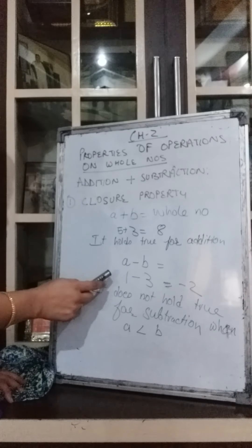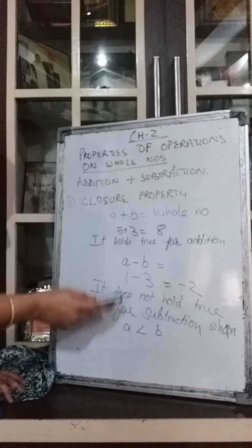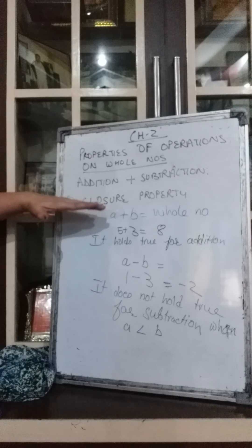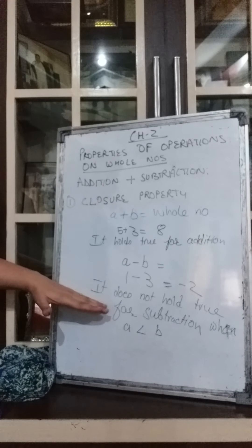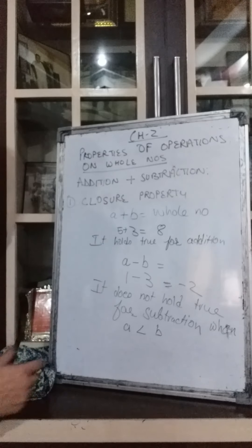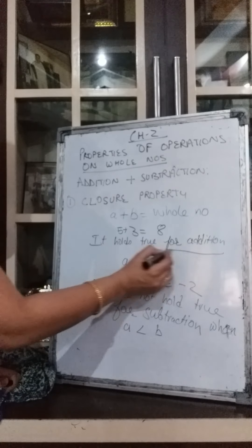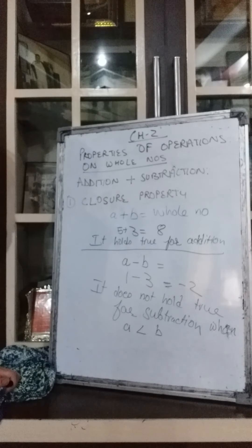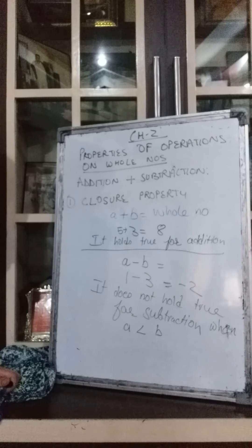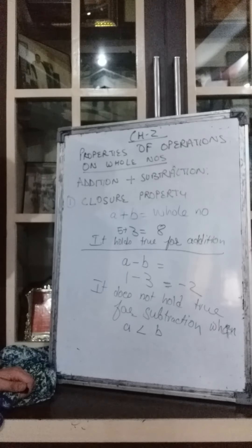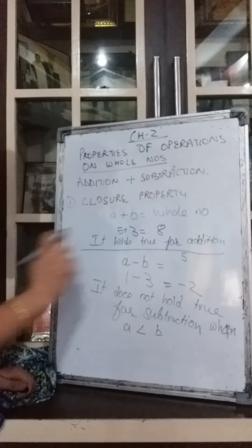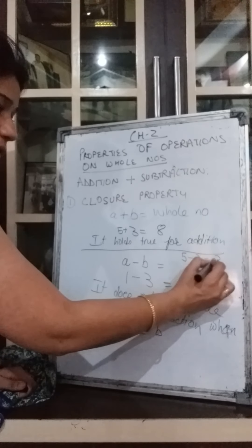Now we come to subtraction. We are taking one property and we will see whether it holds true for addition and also for subtraction — both together. For closure property with subtraction: A minus B, suppose A is 5 and B is 2. 5 minus 2 gives 3, which is also a whole number. So here it holds true.